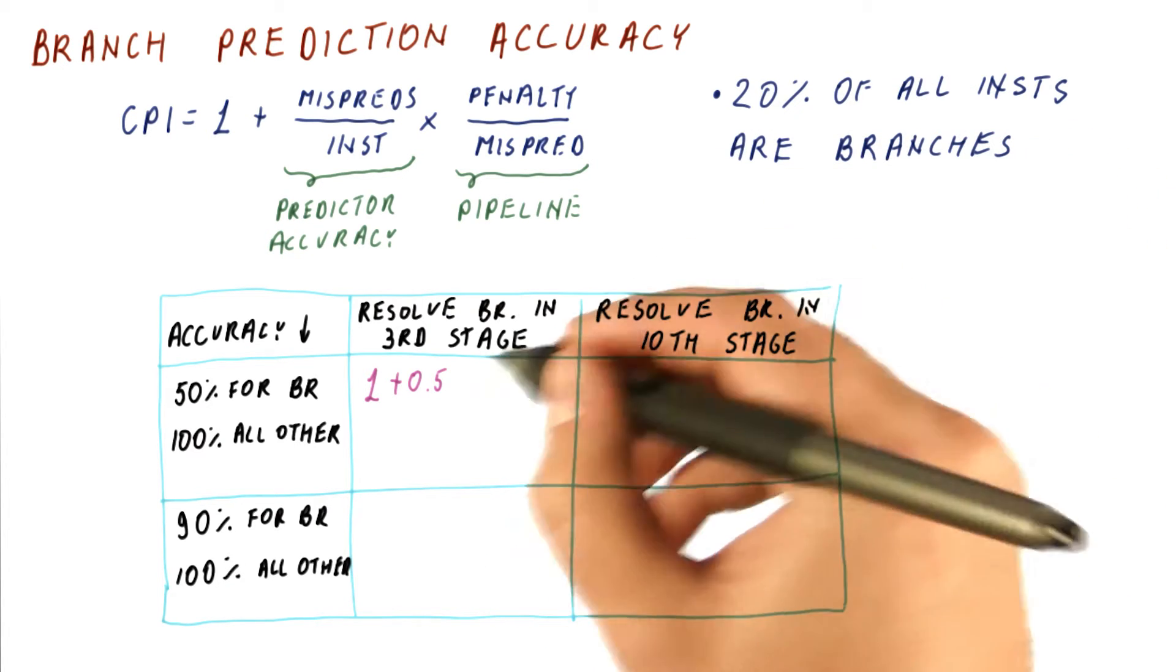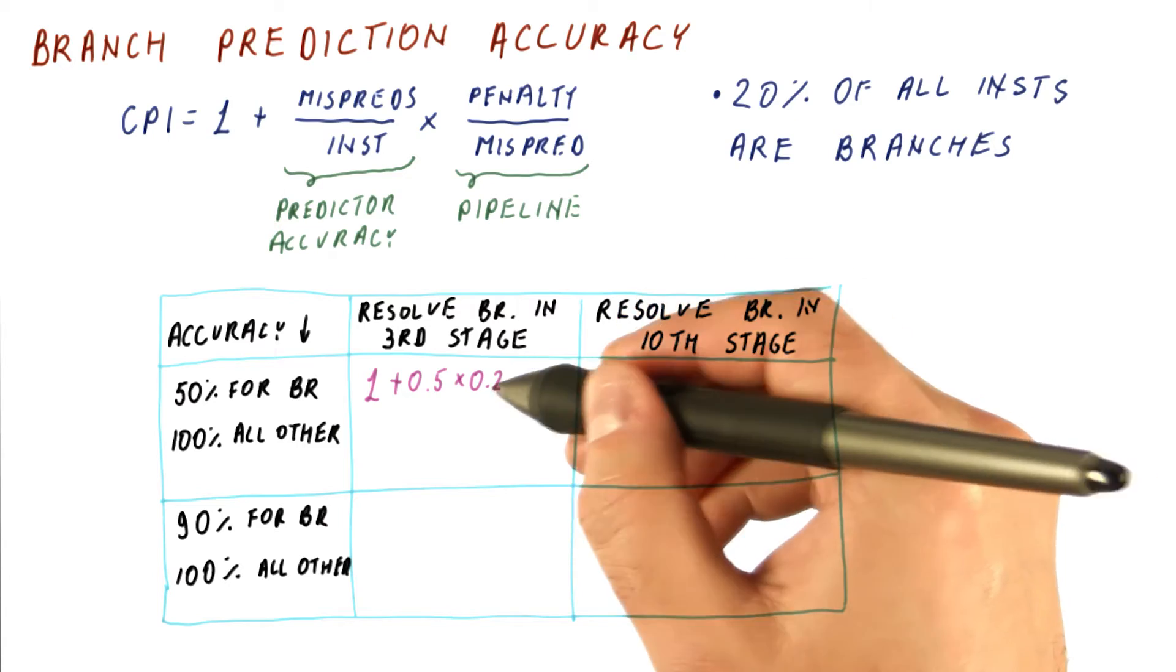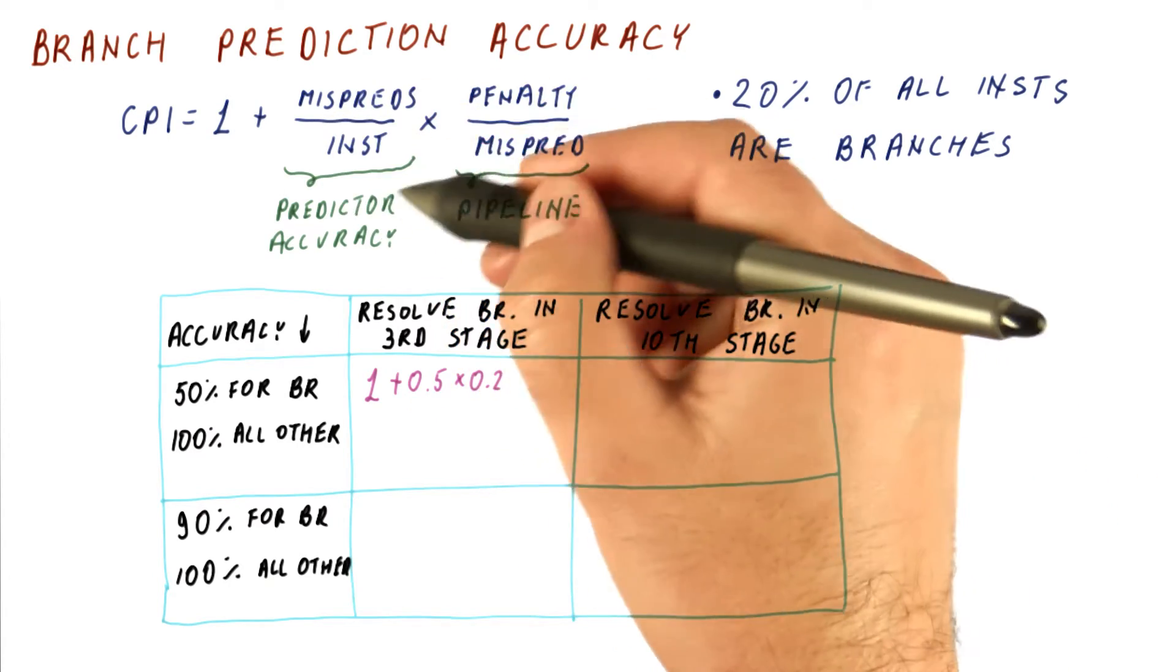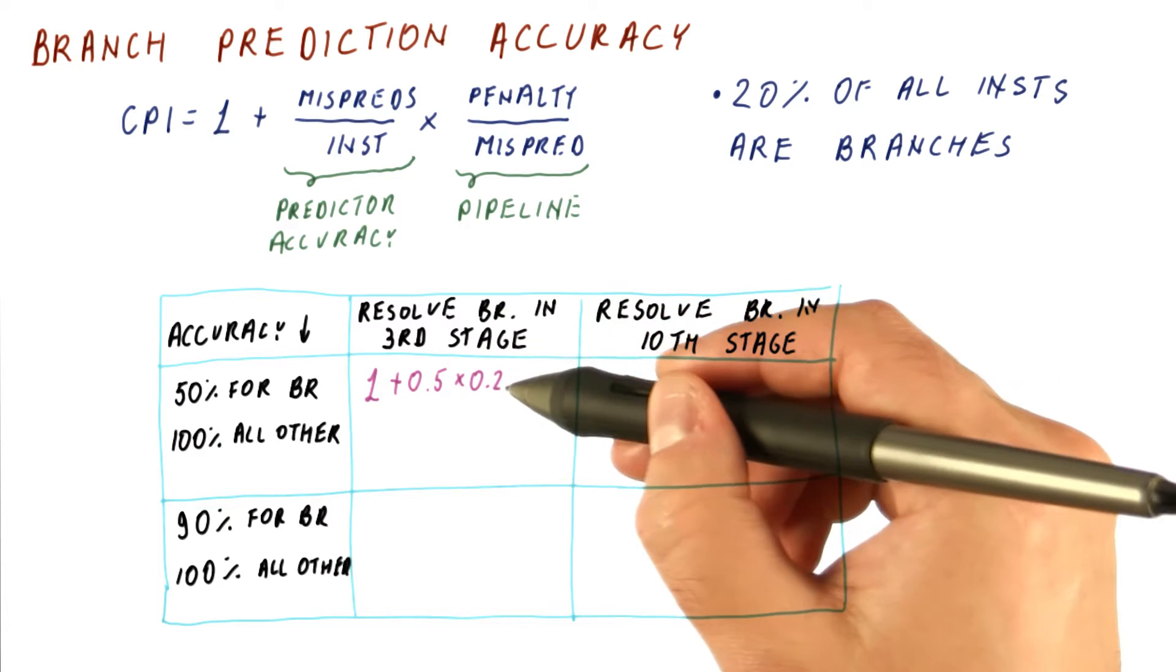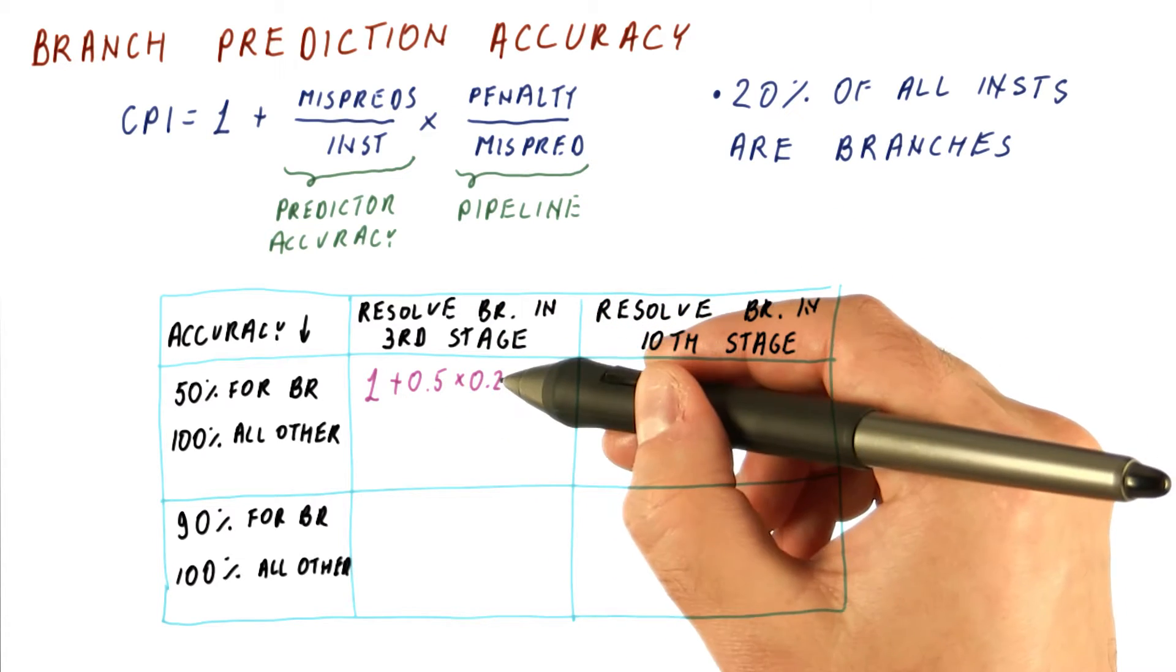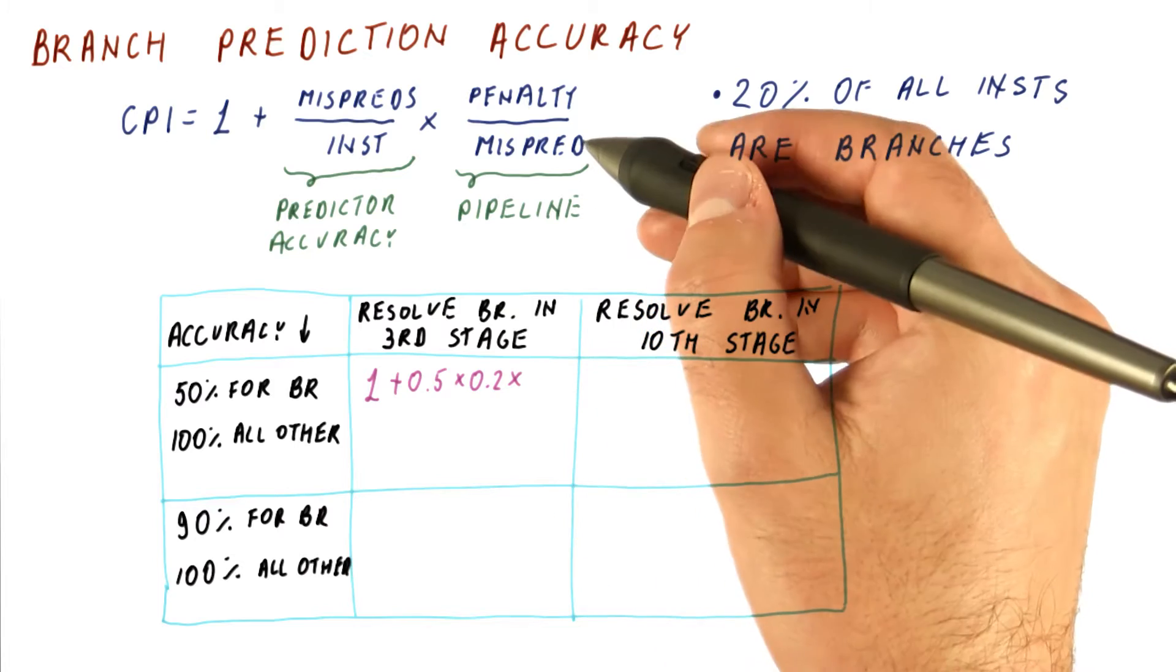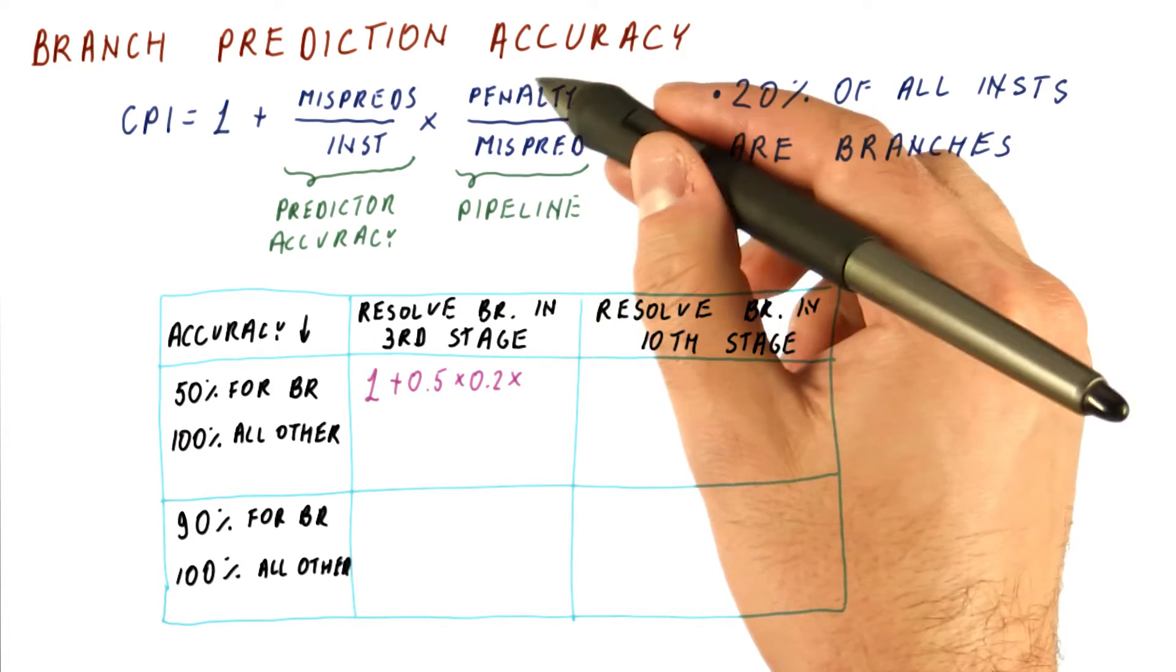But branches are only 0.2 of all instructions. So these two really are the mispredictions per instruction. It's really the mispredictions per branch times branches per instruction. And this is multiplied by the penalty that we get per misprediction.